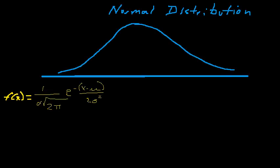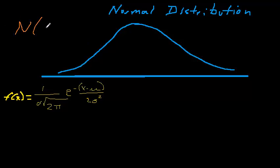Let's talk more about the normal distribution. Here is my best attempt at drawing a normal density curve. The normal distribution has two parameters: mu and sigma, for the mean and standard deviation. These two parameters completely define the distribution — this is a parametric distribution, so all you need are those two parameters to know everything about the distribution and how to derive probabilities from it.